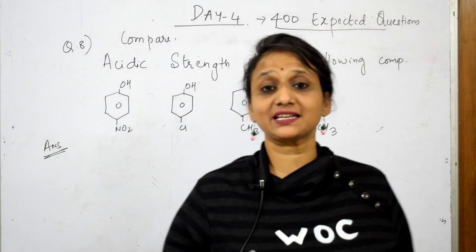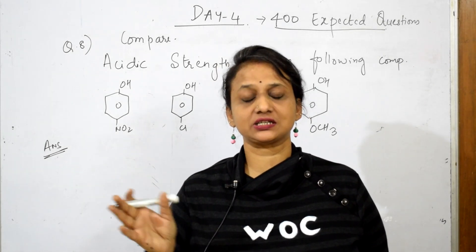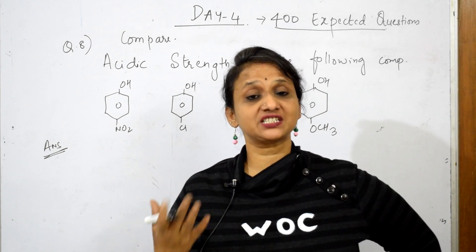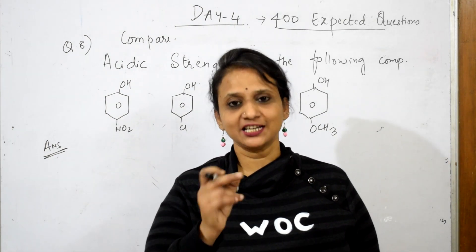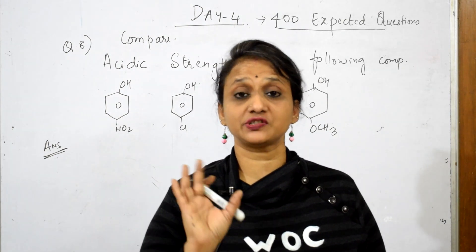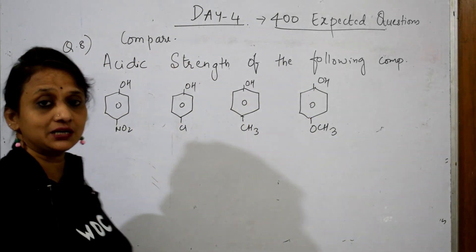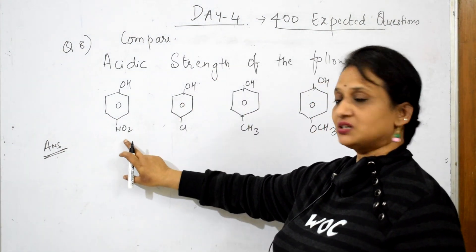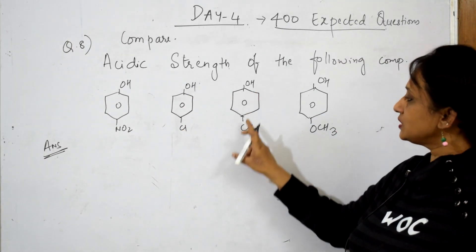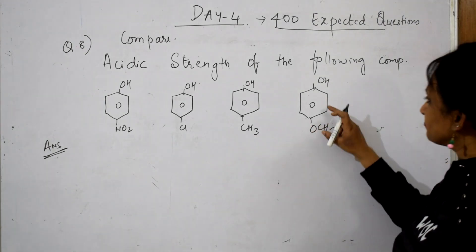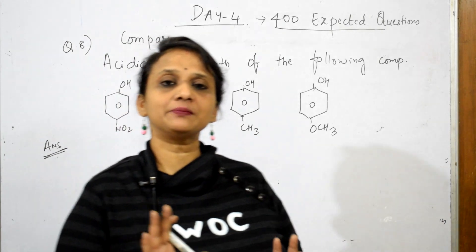Now let us come back and see one more question of your organic chemistry, which is very important — comparison of acidic strength, comparison of basic strength, comparison of stability, comparison of boiling point. Lots of questions we are going to do, students. Read the question — concept is important. What do they give me? Compare acidic strength of the following compounds: phenol with nitro at the para position, phenol with chloro at the para position, phenol with methyl or alkyl group at the para position, and phenol with methoxy (OCH₃) group at the para position.